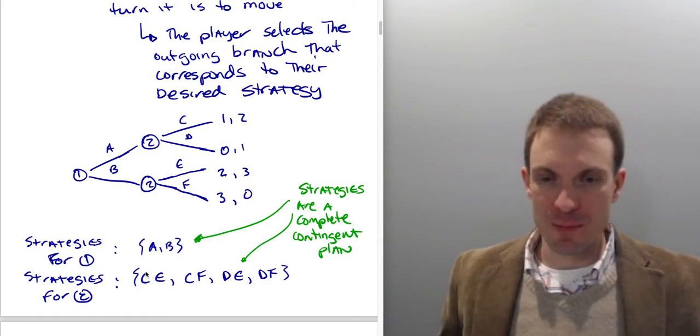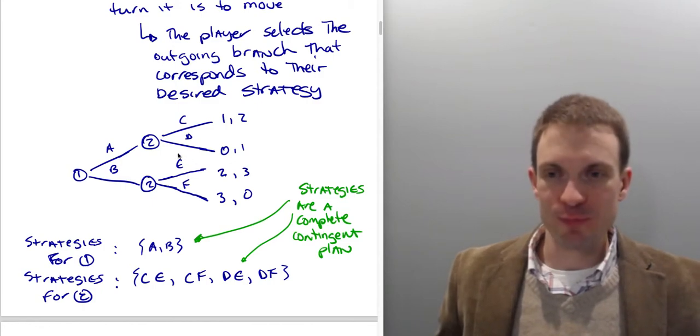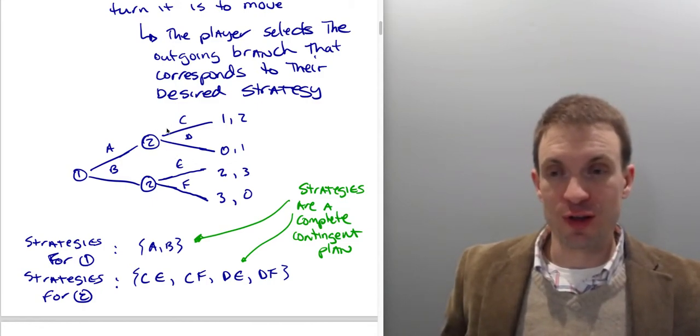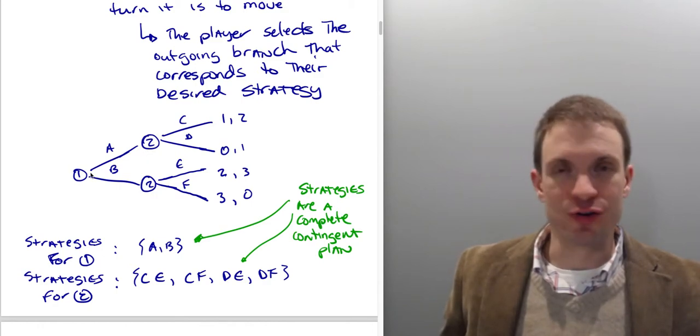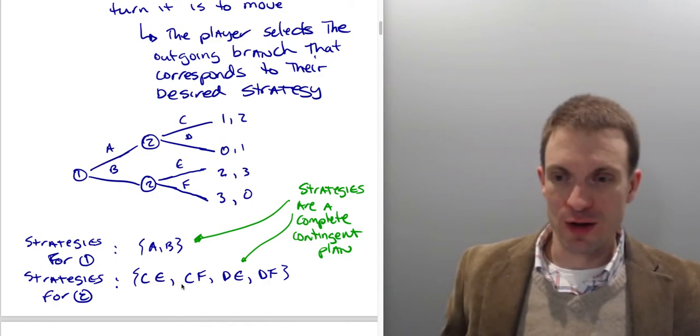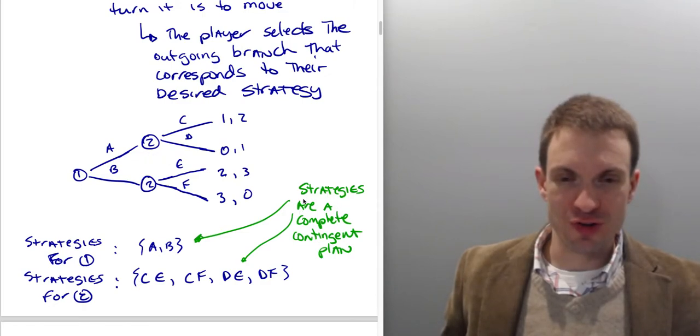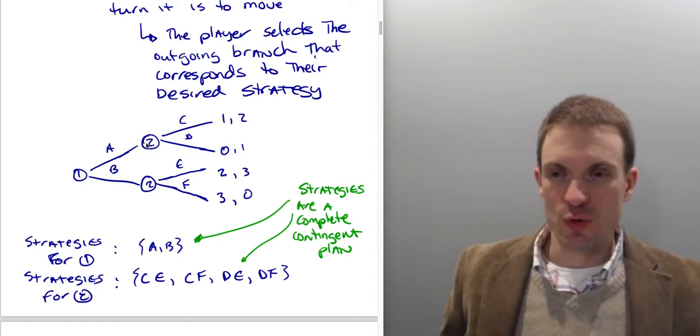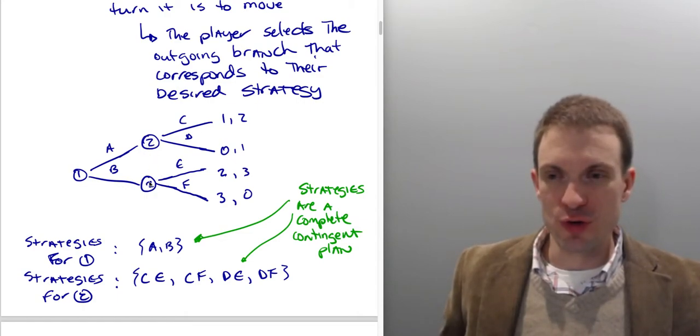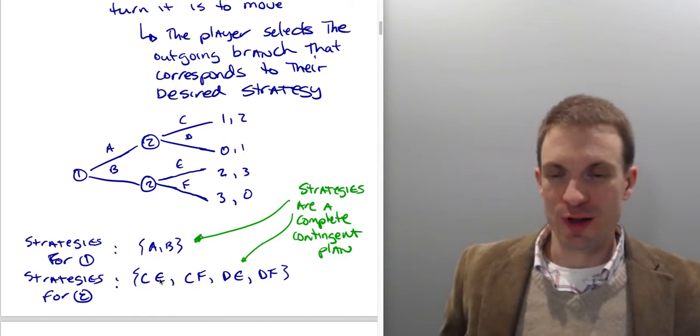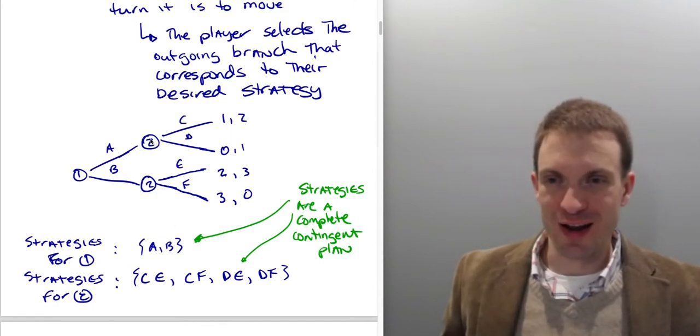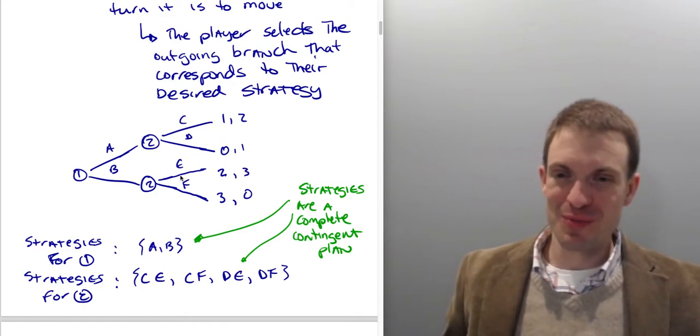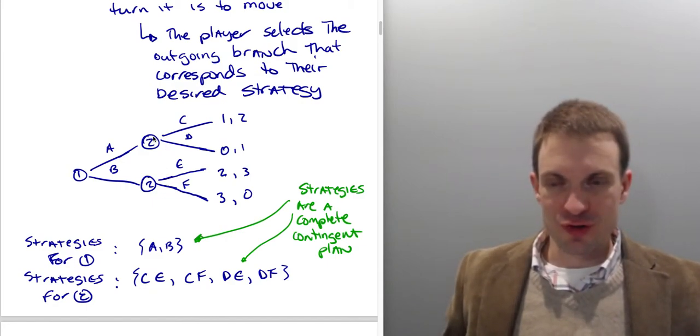The important thing we're picking up as we're stipulating that strategies are a complete contingent plan is the idea that when player 2 chooses, it matters if player 1 has chosen A or B. And strategies as a complete contingent plan is telling us that we have to know what player 2 is going to do wherever they might be, wherever they might find themselves in the game. Player 2 is not ever really going to be both selecting C and E.